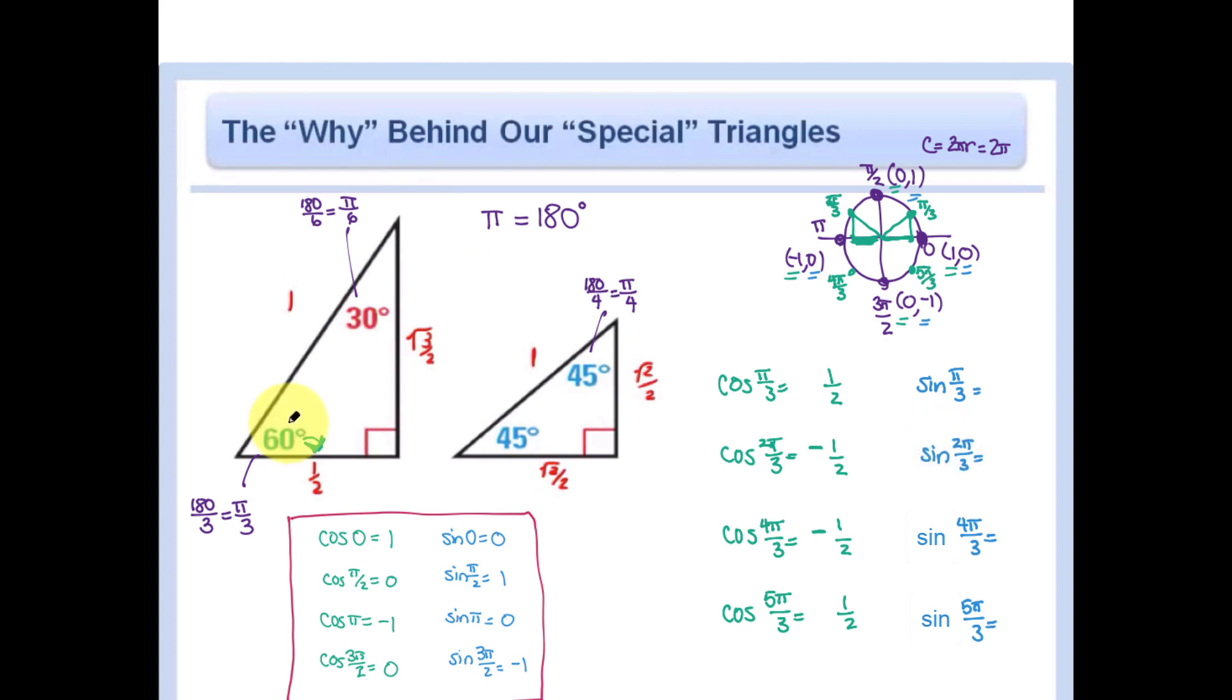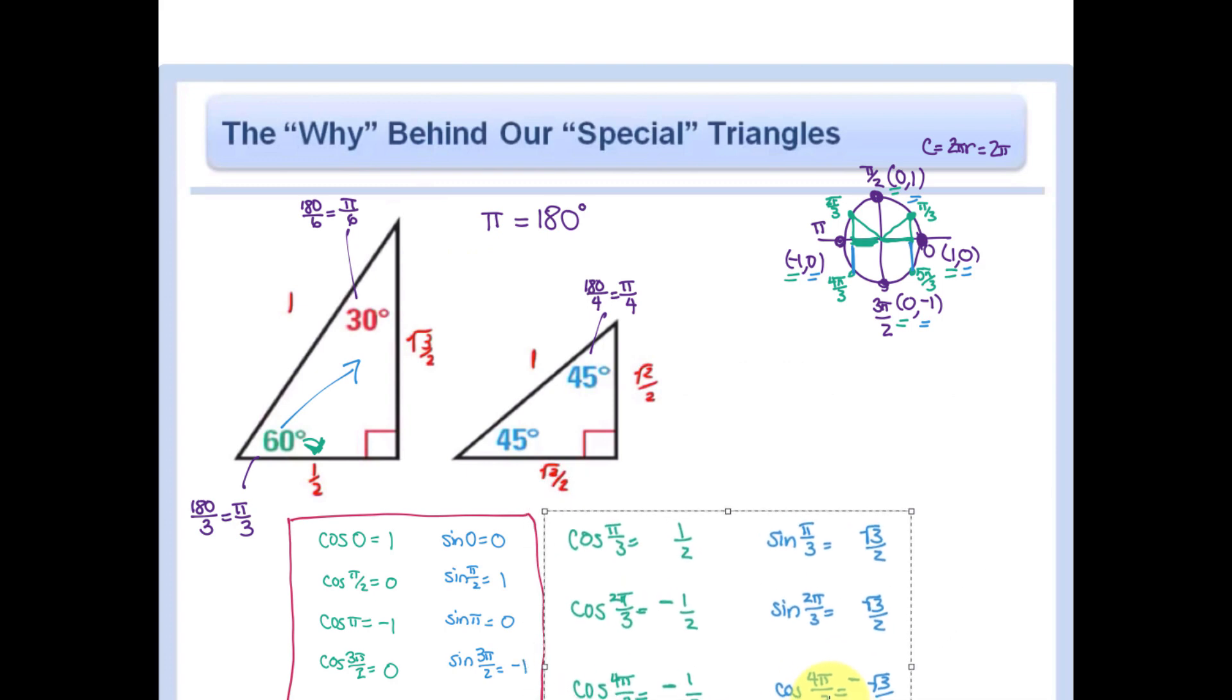And then when we do sine, the sine is what's opposite. Opposite is this root 3 over 2. Sine of pi over 3, that's positive. The sine of 2 pi over 3, well 2 pi over 3 is also a positive y. But 4 pi over 3 is going to be a negative y, and so is 5 pi over 3. Those are both going to be negative answers. So that's how I do that. That's as simple as it is.